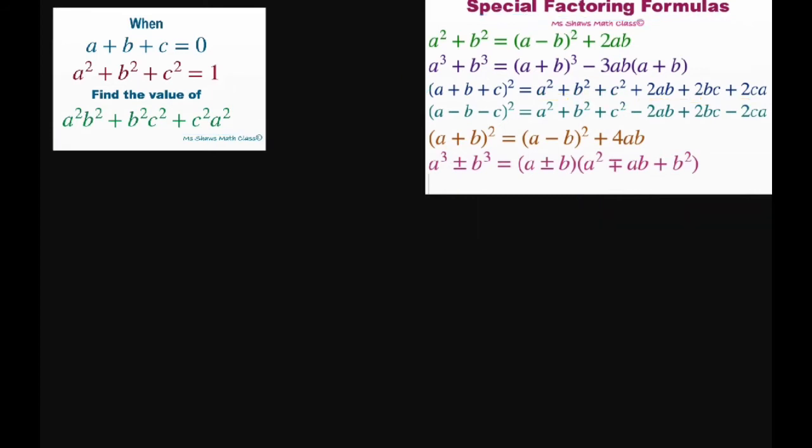So basically if we have a squared b squared plus b squared c squared plus c squared a squared, again we're going to use the same formula here as this format, just more variables.